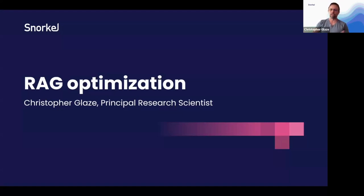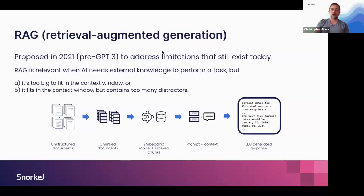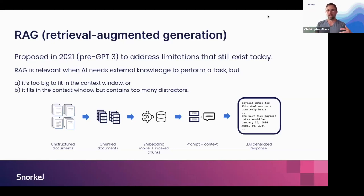I'm going to talk about RAG optimization and fine-tuning, and give a basic overview of that process and how we approach it at Snorkel. RAG stands for Retrieval Augmented Generation. The term was coined several years ago, pre-GPT3. The idea was to address limitations of AI when it needs access to an external knowledge source — how do you get the pieces of that knowledge source relevant to the AI's task? Those limitations still exist today, even with large context window models, so we see RAG as remaining relevant.